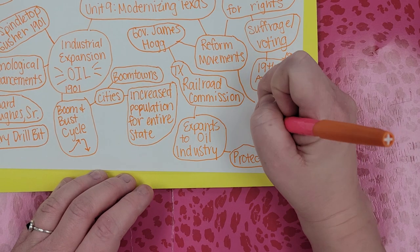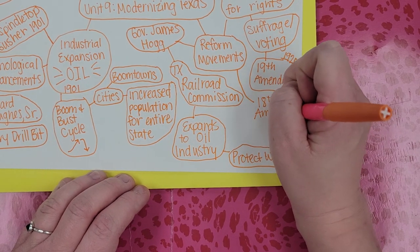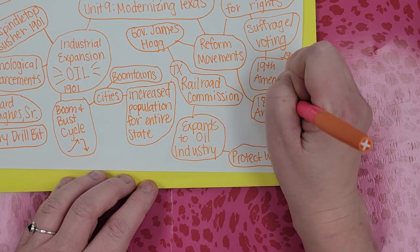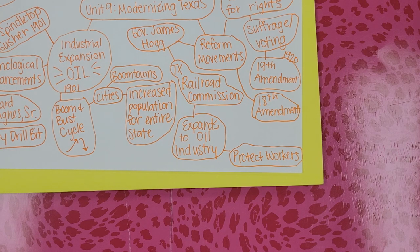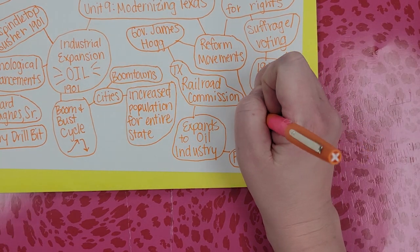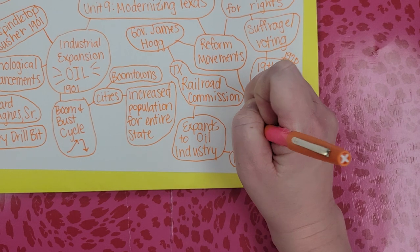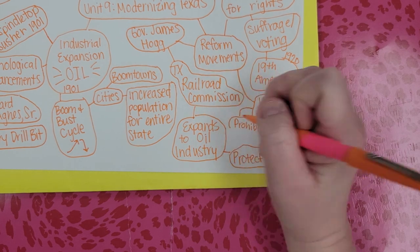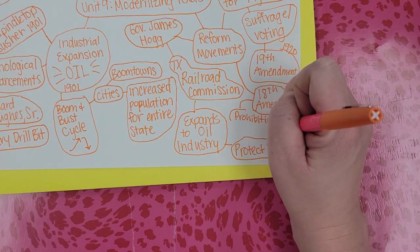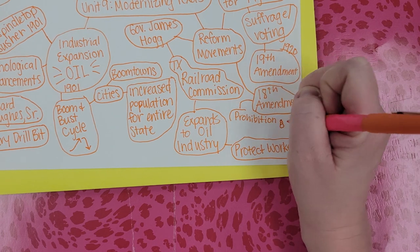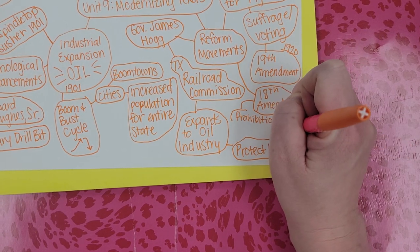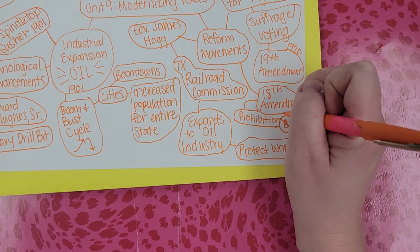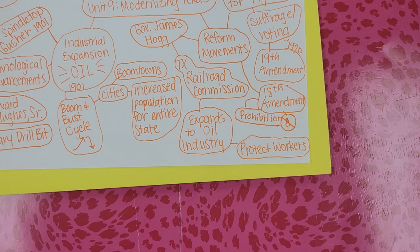There's another amendment that was passed — the 18th Amendment — and that is about temperance, also known as prohibition. It's the banning of alcohol and it led to organized crime. The 18th Amendment was eventually repealed by the 21st Amendment, but that comes much later.